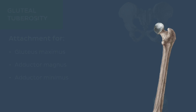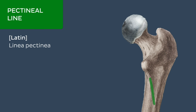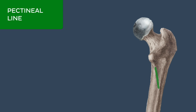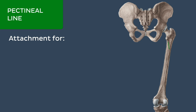Extending proximally from the medial lip of the linea aspera is the pectineal line, which extends in a supramedial direction towards the lesser trochanter. As its name suggests, the pectineal line forms an attachment site for the pectineus.